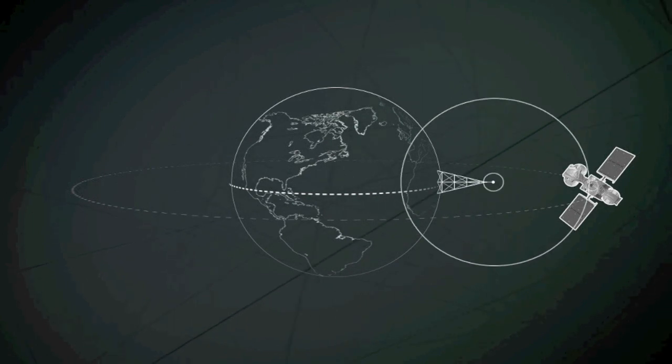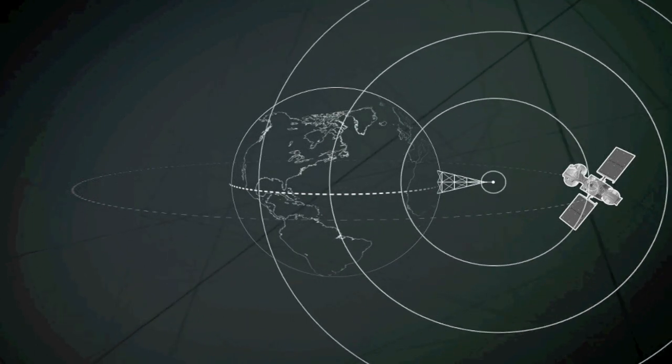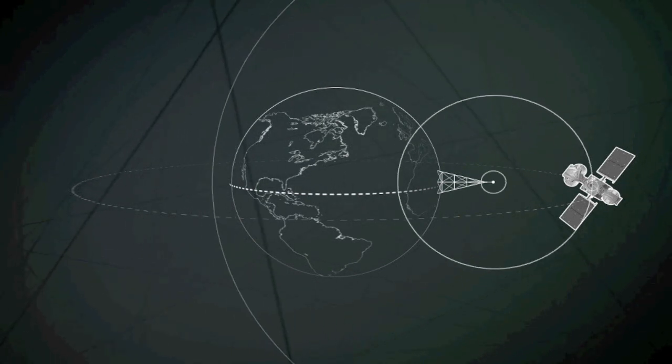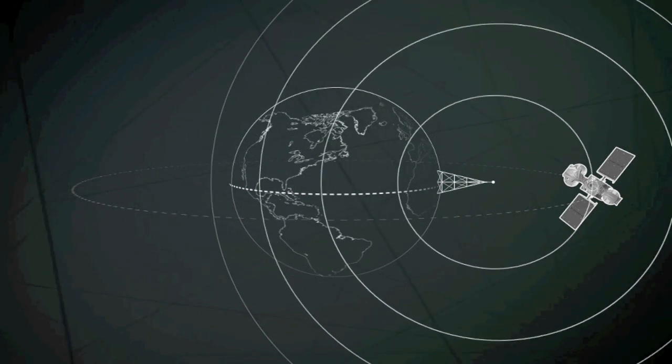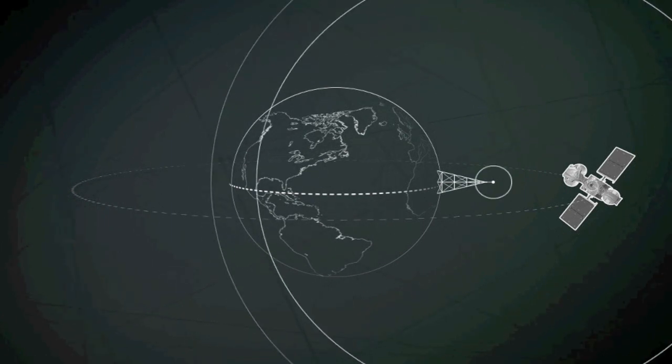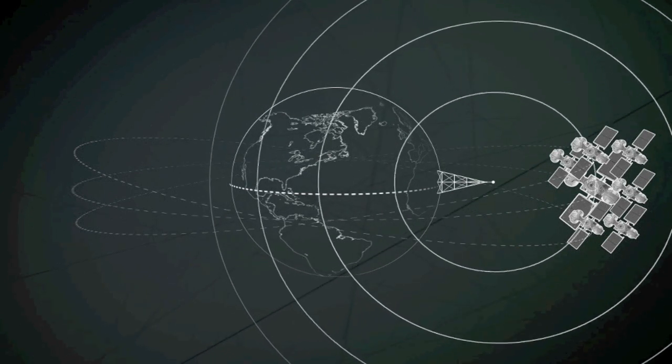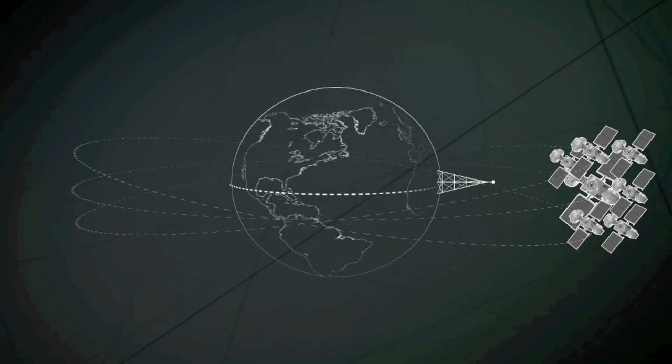The advantage is that antennas on the ground do not have to move to track a satellite, but it also means that this part of space becomes crowded. Because satellites must be kept a certain distance apart to avoid radio interference, only a limited number of orbital slots is available.